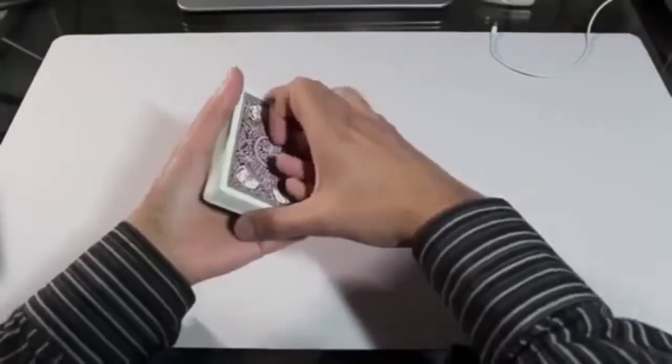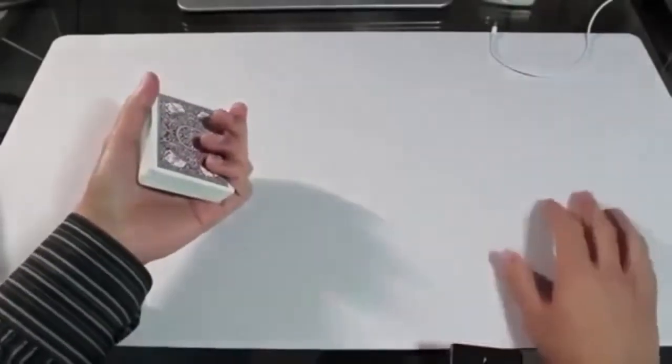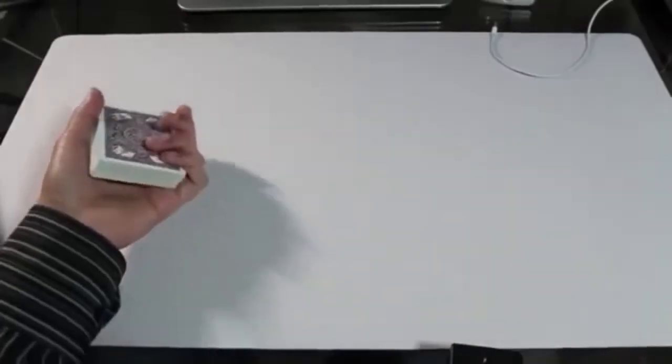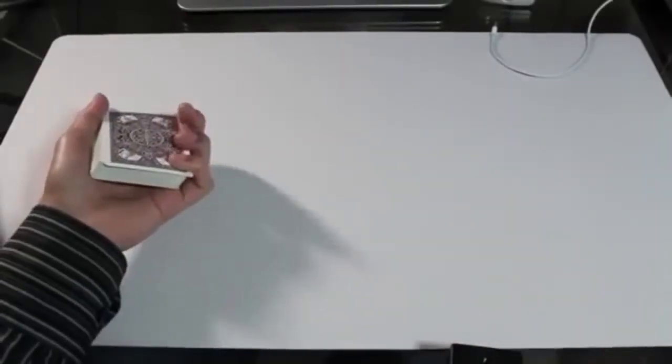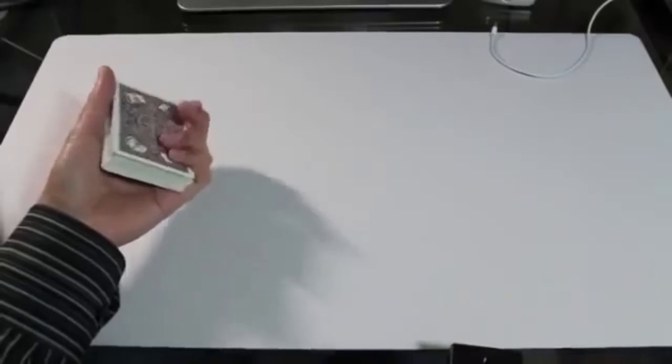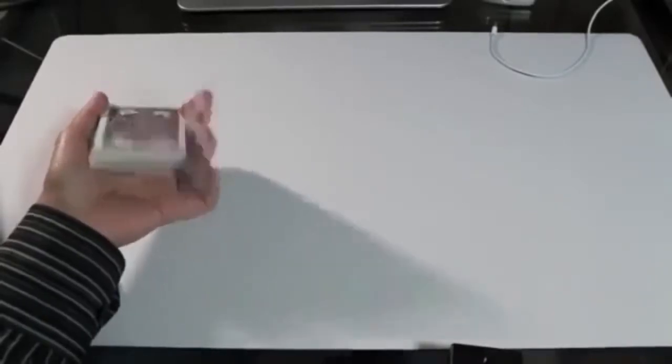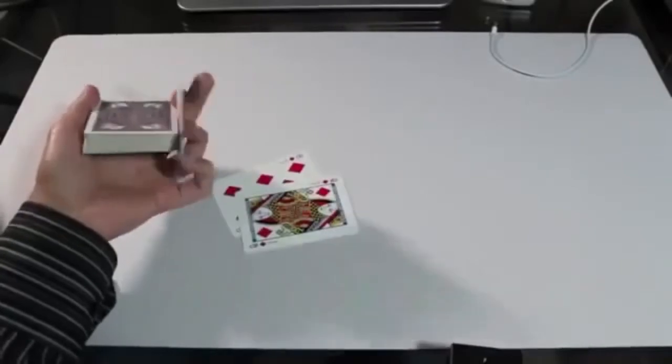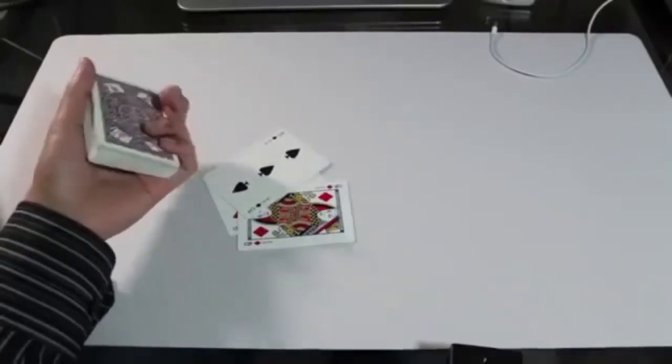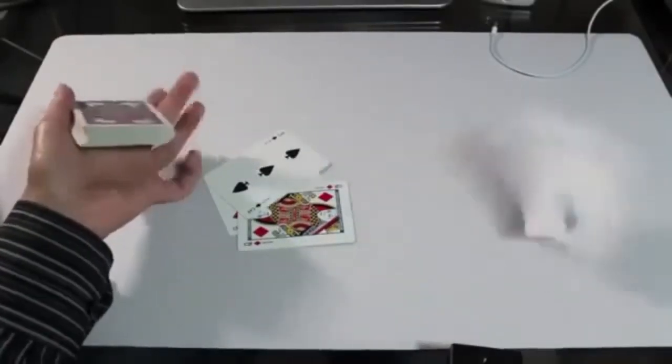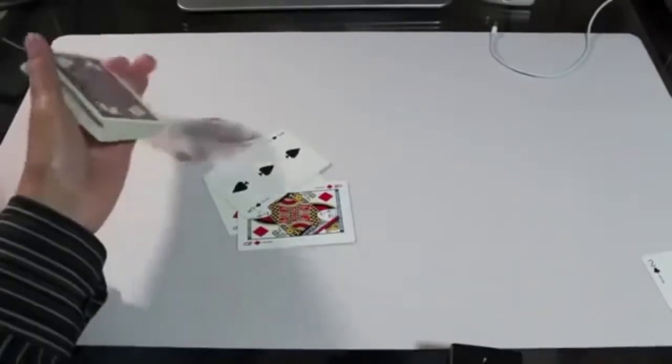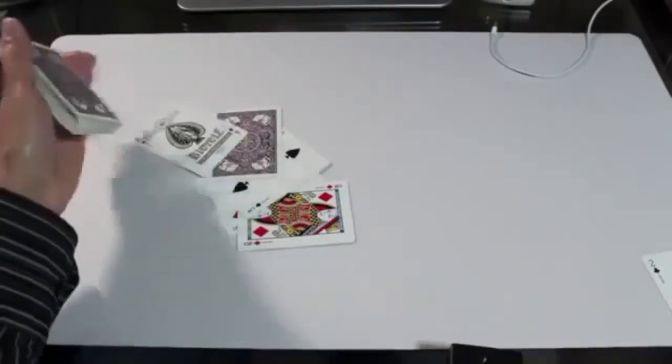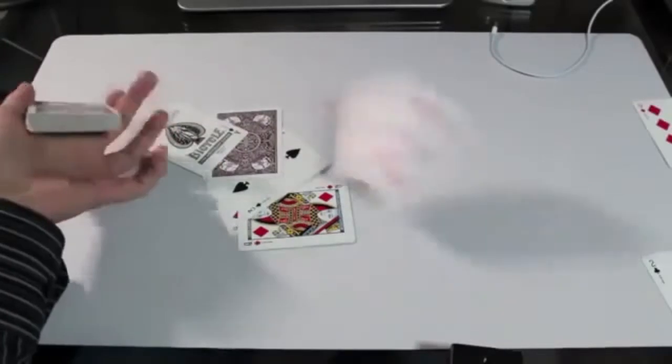So when you're first starting to practice, don't worry about catching the card. That'll come later. Just practice pulling the top card so that it escapes the grip from your thumb. So it's almost like a cardini change at this point. But then you need to practice flicking it and then moving your fingers out of the way so that the card continues and flies outwards.